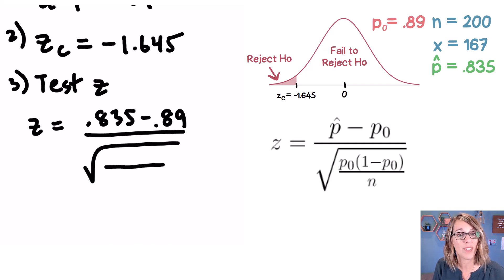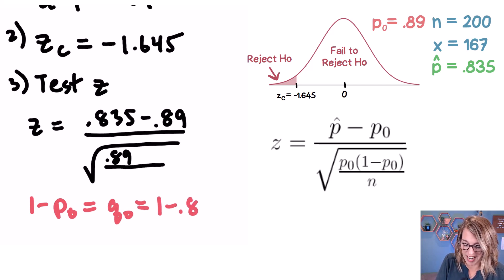That's our expected proportion of 0.89. But they're also asking me for 1 minus P sub 0. 1 minus P sub 0. We could also call this Q sub 0. That might be familiar to you, if not, no big deal. It's 1 minus 0.89. And if I do that subtraction, I end up with 0.11. So back inside our square root, I'm going to multiply this times 0.11. And in our denominator goes our N, which is 200.